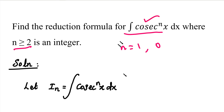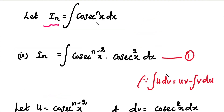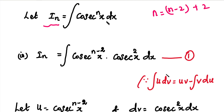If you want to derive for any value of n, we can assume that I sub n equals the integral of cosecant power n x dx. So if we want to integrate this, we write the cosecant power n x as a product. The cosecant power n x is written by splitting the power as n minus 2 plus 2, giving us two separate parts.